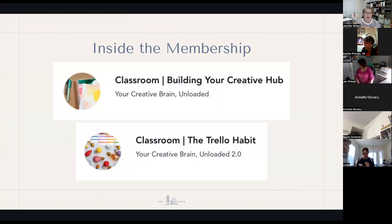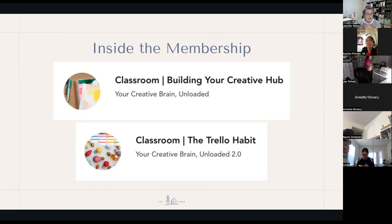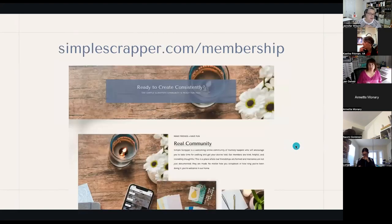Inside the membership, we have two different classes to help you get started. The first, created around 2016, is Building Your Creative Hub — it shares an overarching framework and lots of options for things to include, how to start with your why in scrapbooking in mind. The second is the Trello Habit, released at the beginning of last year, which teaches you how to build a creative hub inside Trello. You can visit simplescrapper.com/membership to learn more.